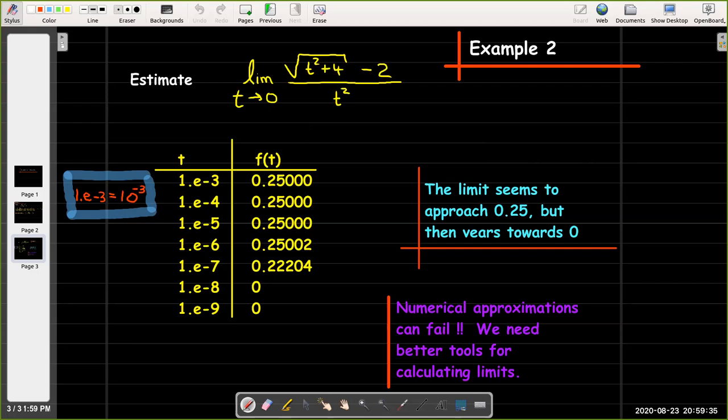Now when I start taking some small numbers I can see that my function value is pretty much stuck at 0.25. So if I only use these small values then I may think that the limit would be 0.25.